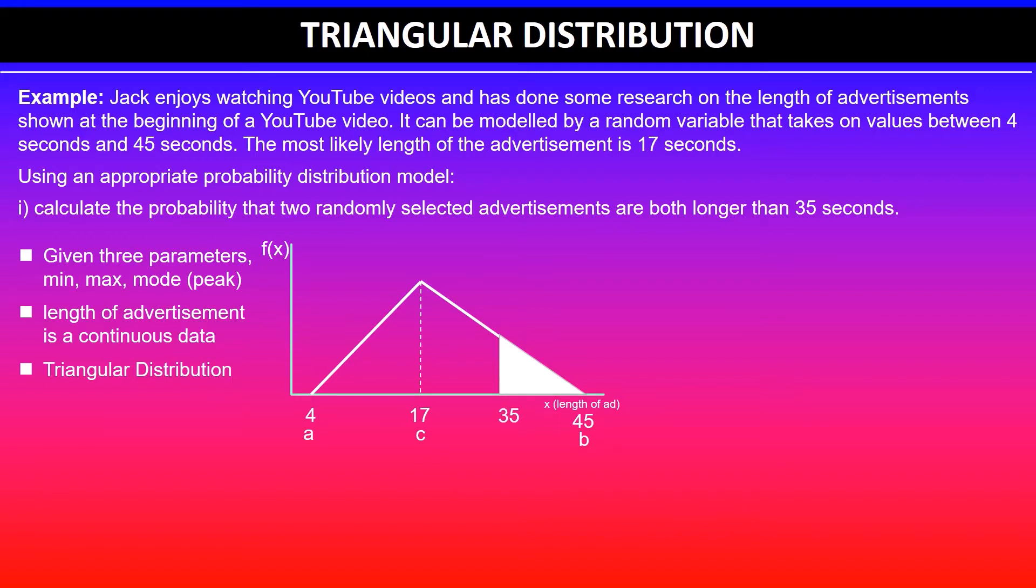The question says longer than 35 seconds, so that's our x value. In this case we need to find the shaded area of this section here, which is a right angle triangle. I've shaded on the right hand side of 35 because it is longer than 35 seconds, so it's between 35 and 45 seconds.